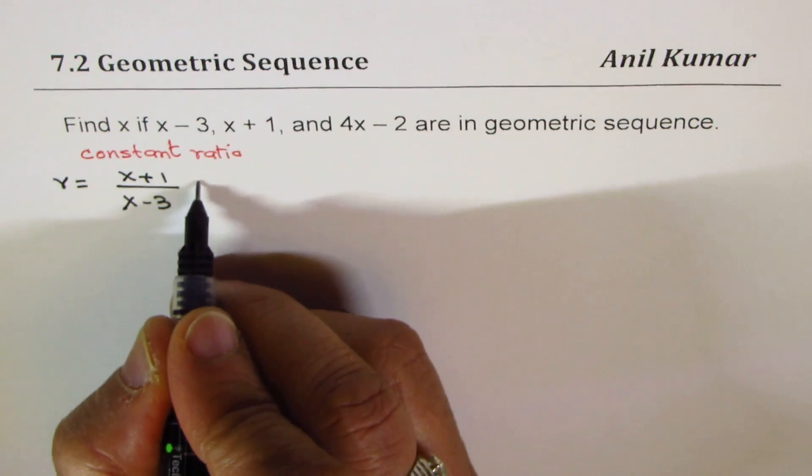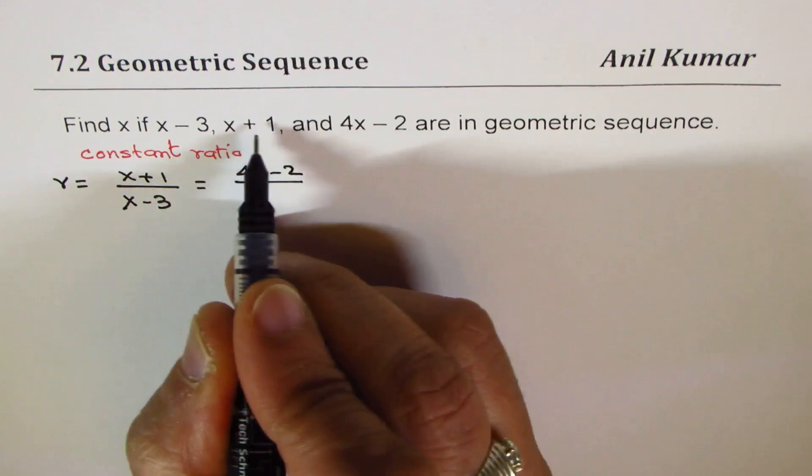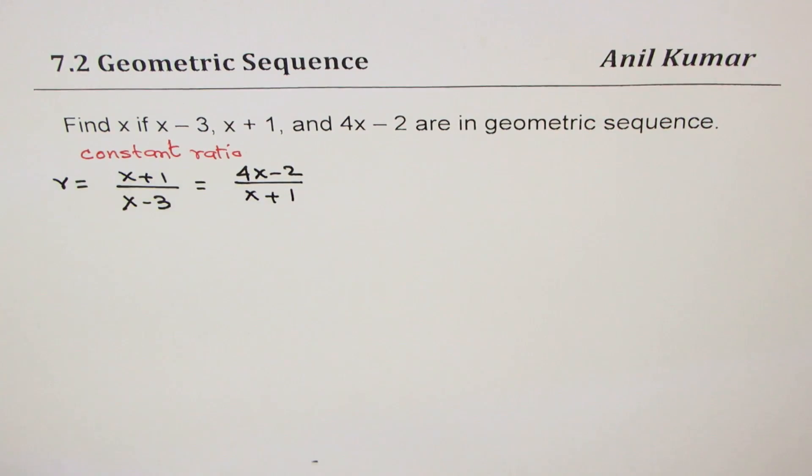So that is ratio r. Similarly, you divide 4x - 2 by its previous term, which is x + 1. And all these ratios are equal to r.